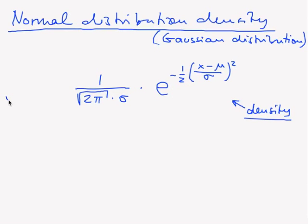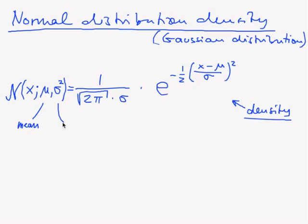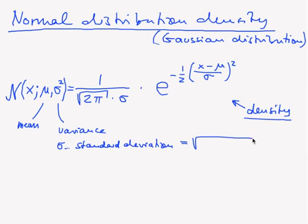This is commonly denoted as N of x. It has two parameters: μ and σ, typically given as σ squared. μ is termed the mean, and σ squared is the variance, whereas σ is the standard deviation, which is the square root of the variance.